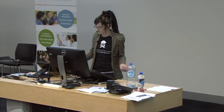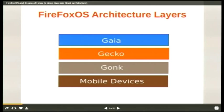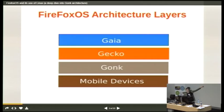Let's jump into the actual layers. Basically, what we're looking at here is what I like to call the three Gs. Under those layers we have the actual mobile device itself. At the top you've got Gaia, Gecko, and then Gonk. Gonk is your Linux kernel, Gecko is Gecko, and Gaia is where your applications are sitting and running. From a security perspective, each application runs in its own sandboxed environment within Gaia.